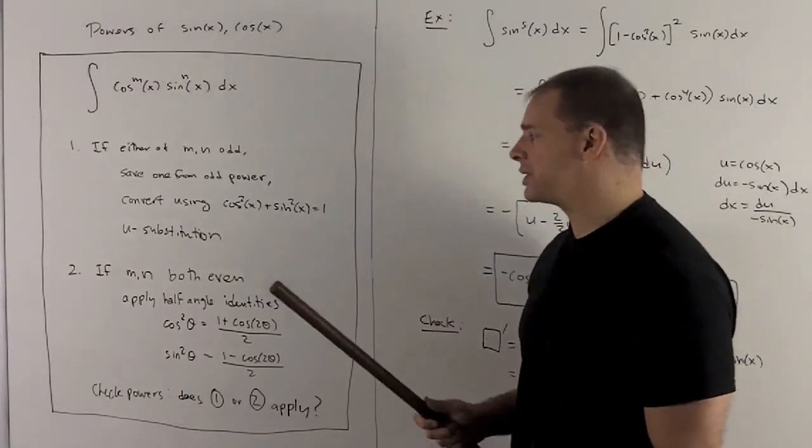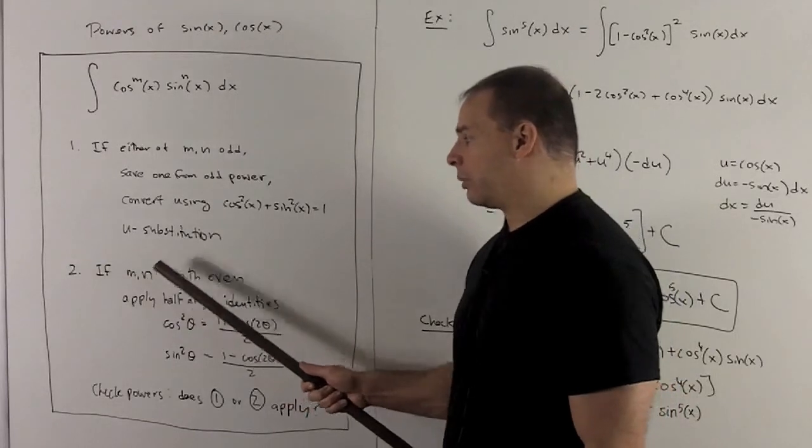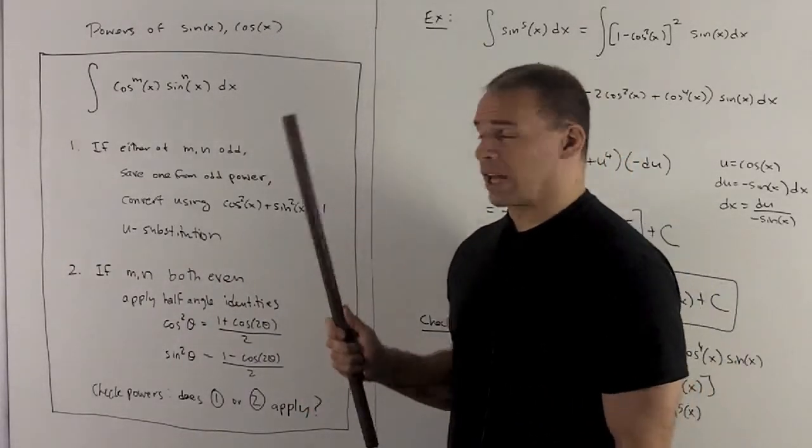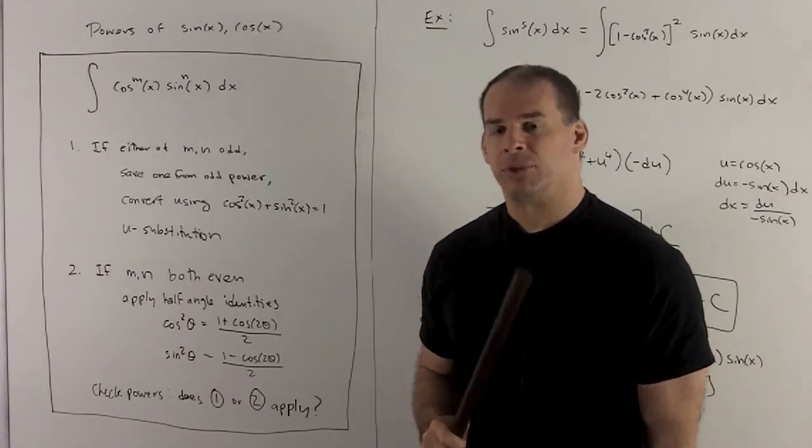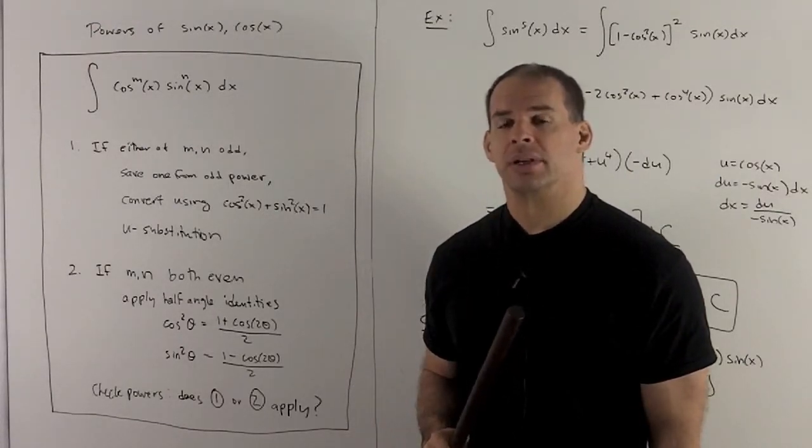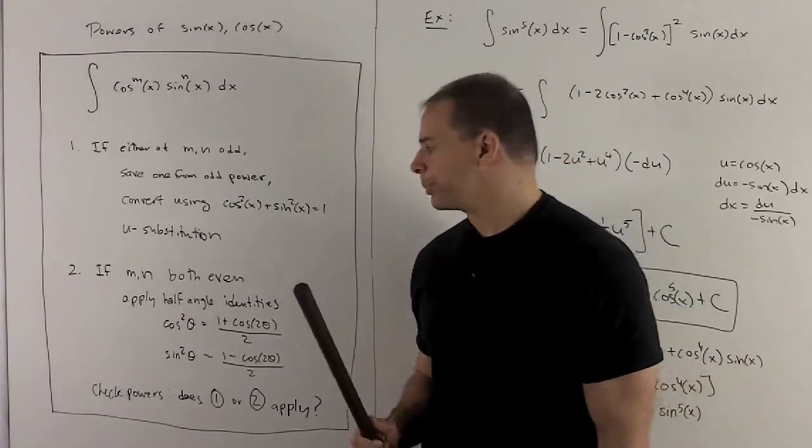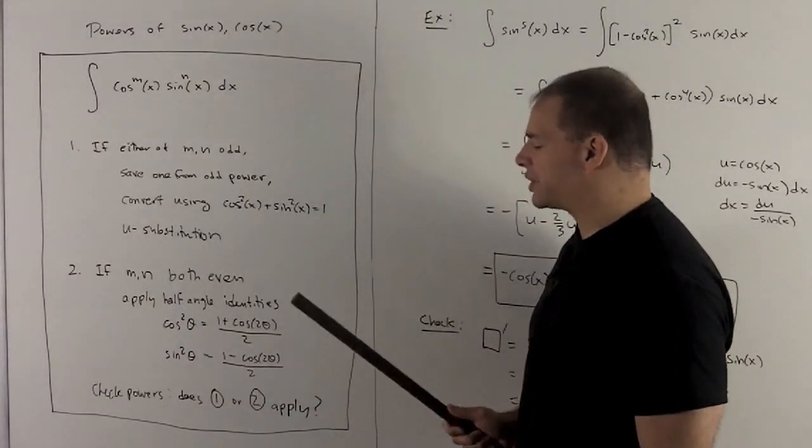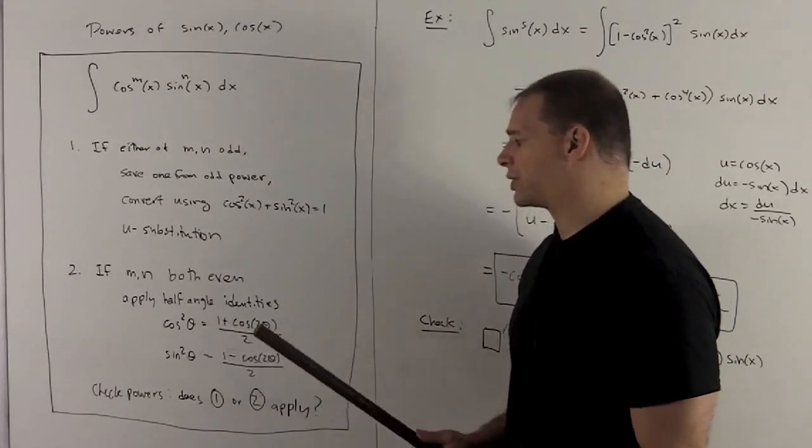In the second case, we'll have m and n are both even. If you try to set aside a cosine or a sine here, you're going to keep running into problems. So we have to use a different approach. For this approach, we're going to use these half-angle identities for cosine squared and sine squared.